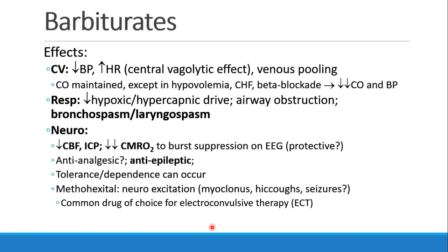Barbiturates decrease the hypoxic and hypercapnic drive, and patients can experience airway obstruction. Bronchospasm and laryngospasm are a little bit more common with barbiturates than with some other IV drugs. In the CNS, we see a decrease in cerebral blood flow and intracranial pressure, and a substantial decrease in cerebral metabolic rate to the point of achieving burst suppression on EEG. Surgeons doing vascular surgery may request barbiturate administration to substantially drop cerebral metabolic rate to protect the brain from hypoxia and ischemia. Some have hypothesized that barbiturates may be anti-analgesic, but they are definitely anti-epileptic and can stop seizure activity.